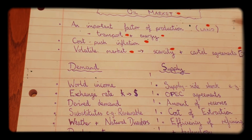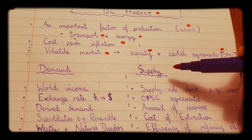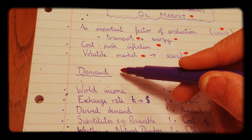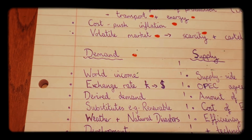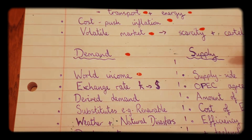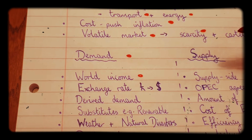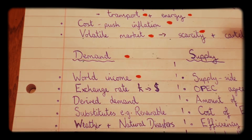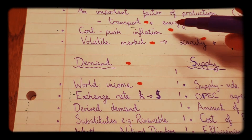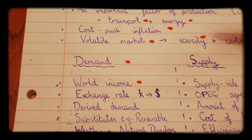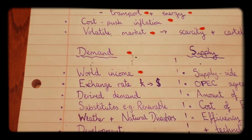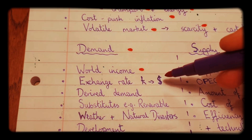We're going to look at the demand and supply factors of oil, starting with demand. One of the big factors of demand for oil is the level of world income and economic activity. If the global economy is in a boom and there's lots of economic activity, that will require more transport and more energy, so that's going to require more oil as well.